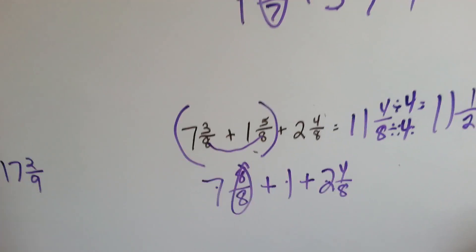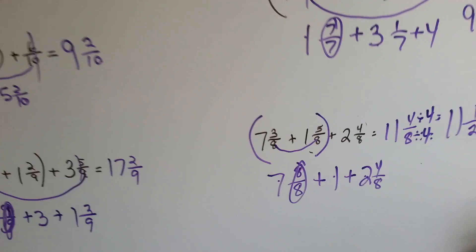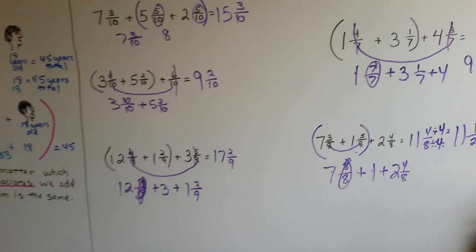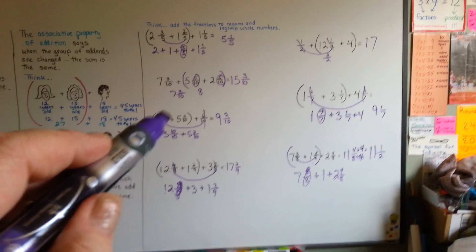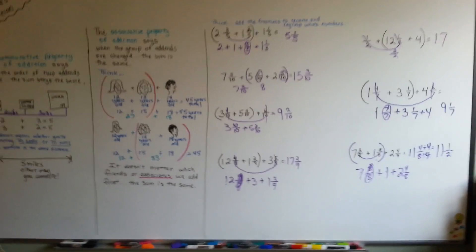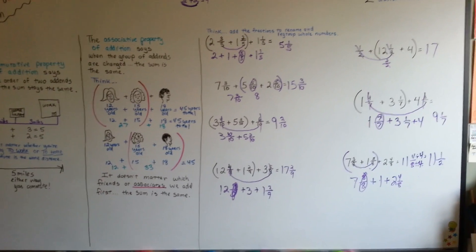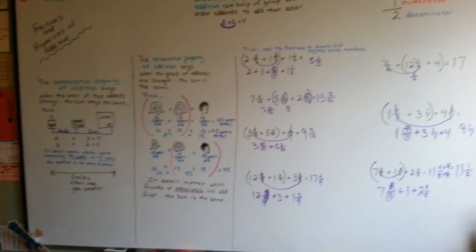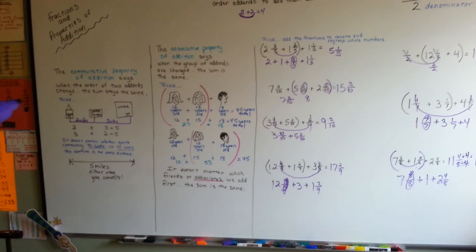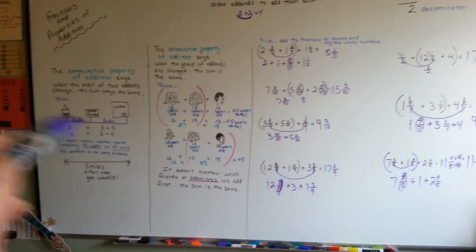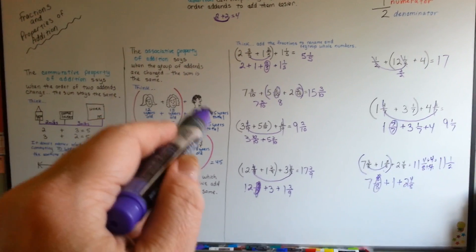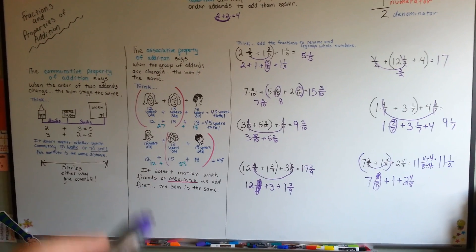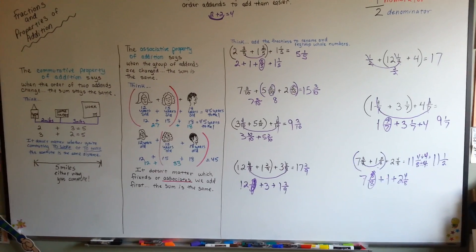So grouping the fractions in the smartest way is going to help you when you're adding them. Because you remember when the numerator and the denominator are the same, it gives you one whole. That helps you add them, doesn't it? Remember commutative property. It doesn't matter if you're going to work or home. It's the same distance. And remember associative property says it doesn't matter which two friends you group together first. They're all going to equal the same thing in the end.